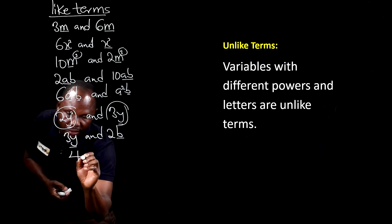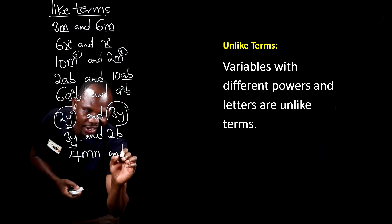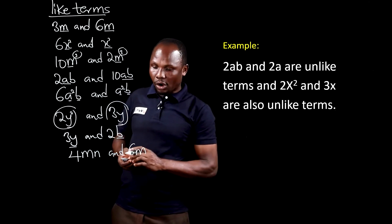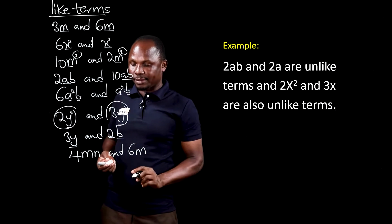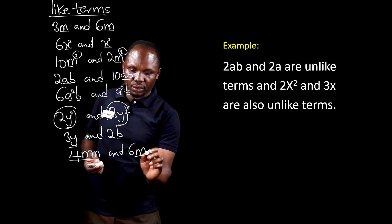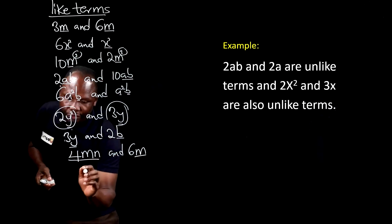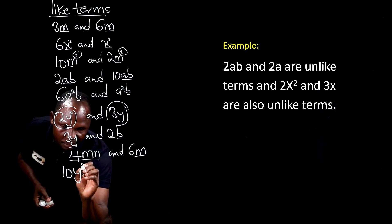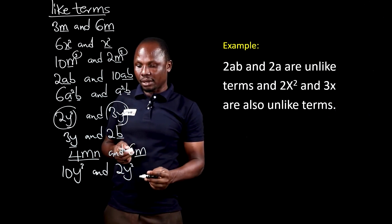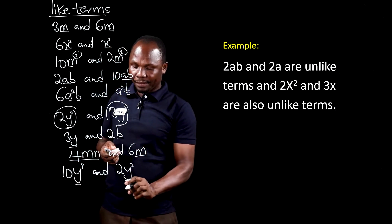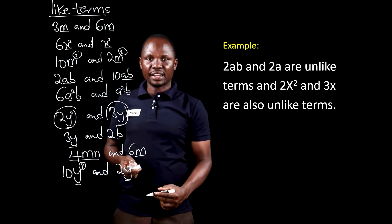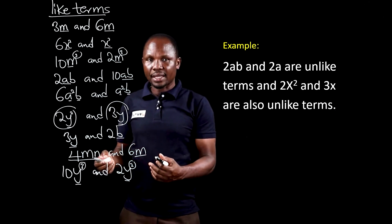If we have 4mn and 6m, they are unlike terms because in the first term, the variables are m and n, but in the second term, the variable is only m. If we also have 10y cubed and 2y squared, they are also unlike terms because even though the variables are the same, the power of the first y is 3 and the power of the second y is 2. Since the powers are not the same, the terms are unlike terms.